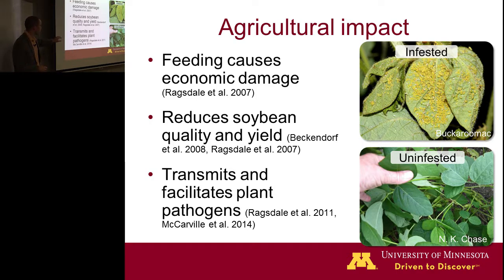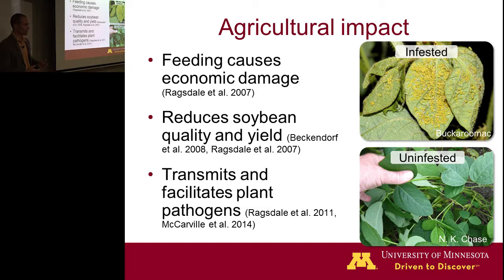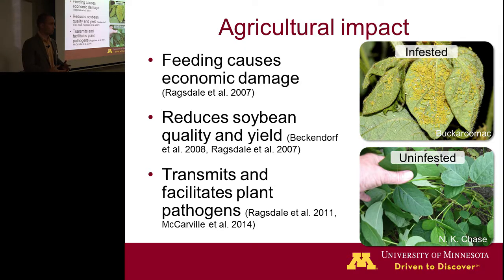In addition, soybean aphid, like a lot of other aphids, is pretty good at vectoring diseases. They can pick up viruses from some plants and transmit them to others, and this has been documented in soybean. Fortunately, these viral diseases that the soybean aphid transmits aren't huge issues in northern soybean production. They have also been documented facilitating soybean cyst nematode, which is an important pest of soybean as well.